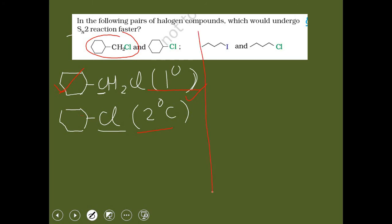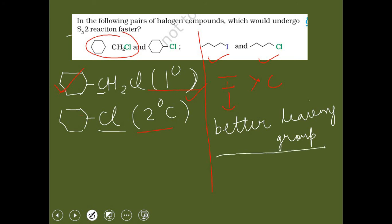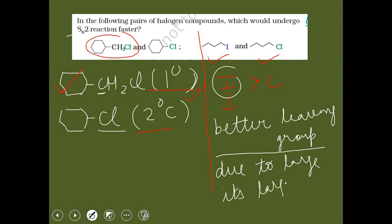In the second question, two compounds with the same number of carbon atoms are given — one with iodine and one with chlorine as the halogen. Iodine has a larger atomic size than chlorine, and as we move down the group, atomic size increases and bond length also increases, making iodine a better leaving group. Therefore, the iodine-containing alkane undergoes SN2 reaction at a faster rate.